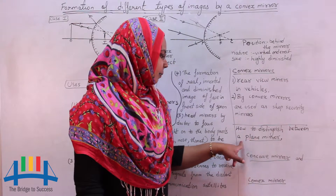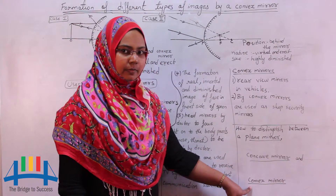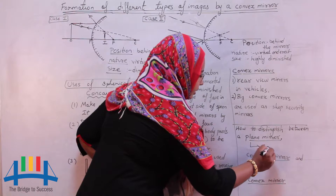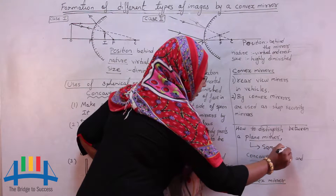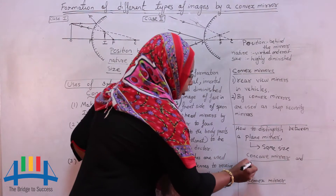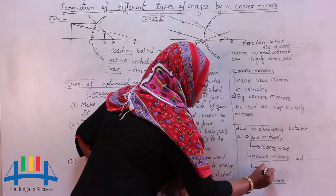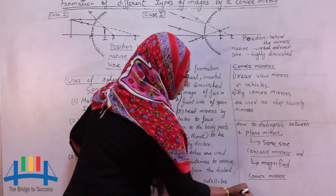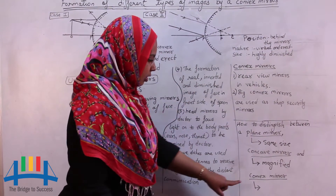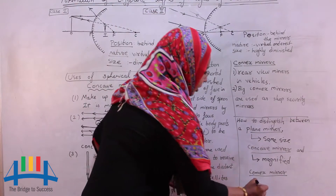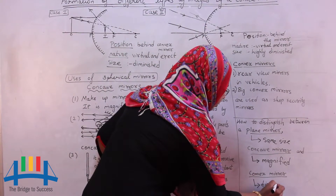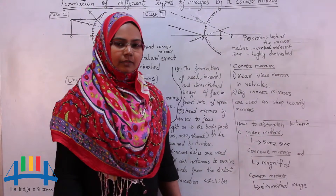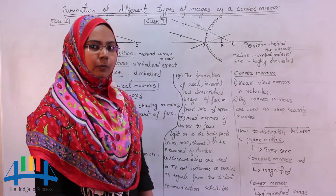How do we distinguish between a plane mirror, concave mirror, and convex mirror? A plane mirror produces an image of the same size as the object. A concave mirror produces a magnified image. A convex mirror produces a diminished image — a small-sized image compared to the object. With this, we end our topic.